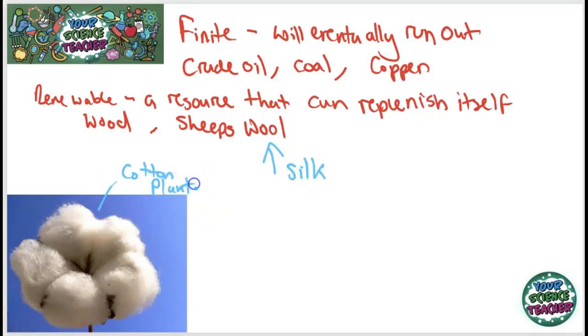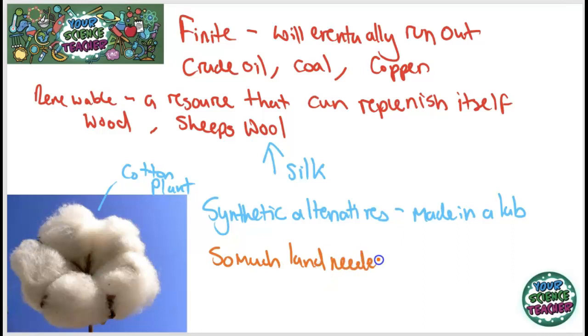However, we do not always choose to get these resources naturally. We come up with synthetic alternatives, and what it means to be synthetic is it basically means made in a lab, often out of plastic. The reason we choose to use synthetic alternatives to the natural products is because we are taking up so much land with planting natural resources that it just requires too much land, so it's easier to make a lot of these things out of plastic.